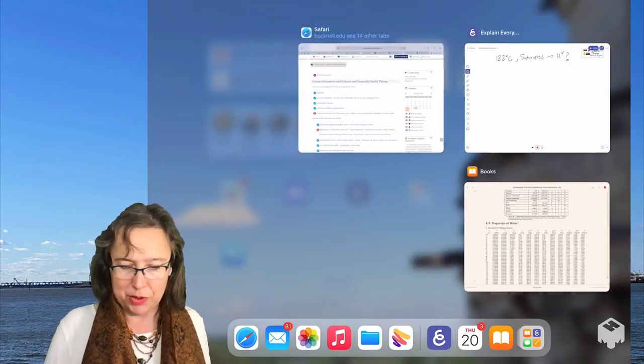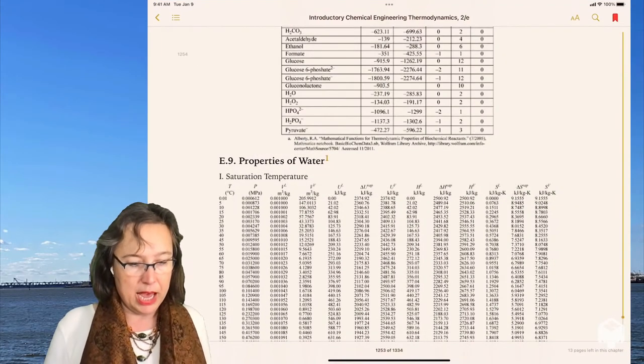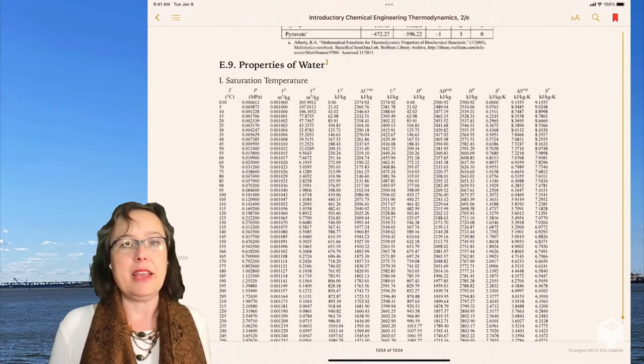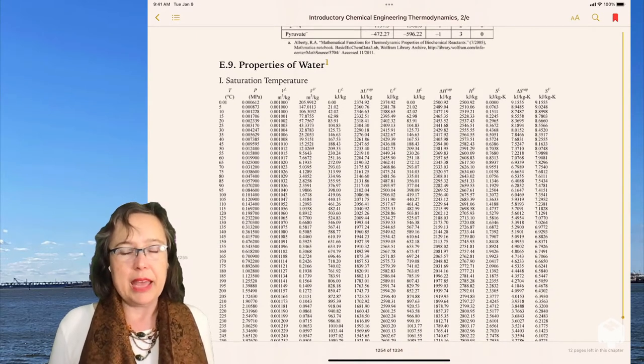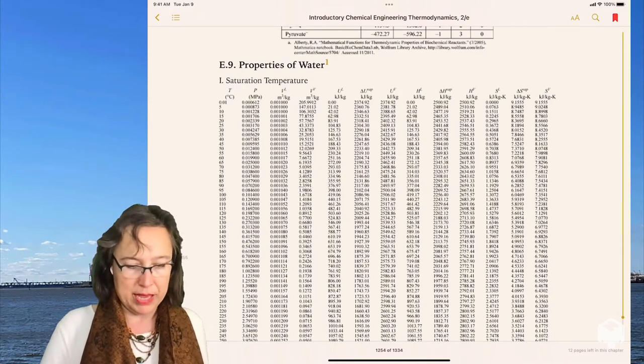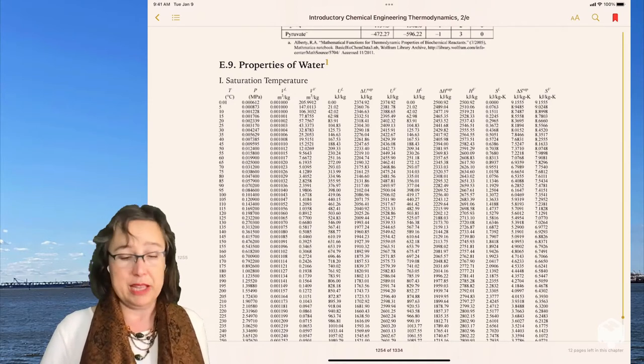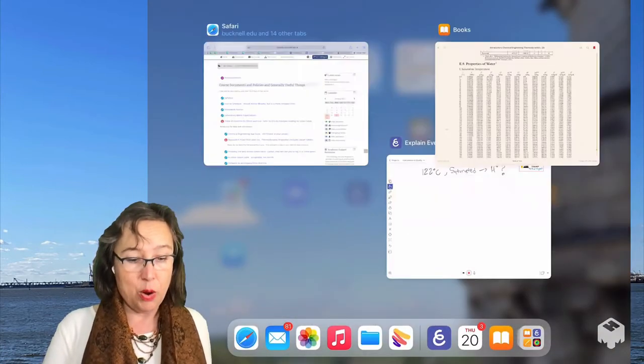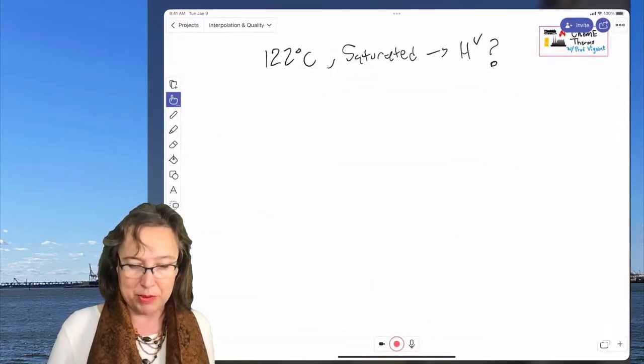So what I want to do is I want to go to my textbook, and E9 has properties of water, and this version of the textbook, I can't really write on it, and I'm going to want to scribble and so on. So it's helpful to either have it printed out, or in my case, I screen capped it,